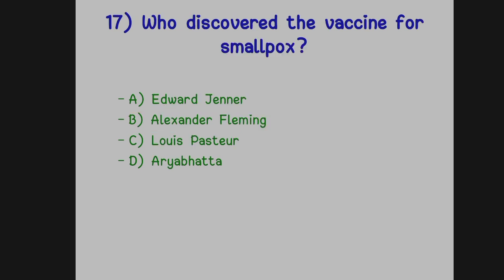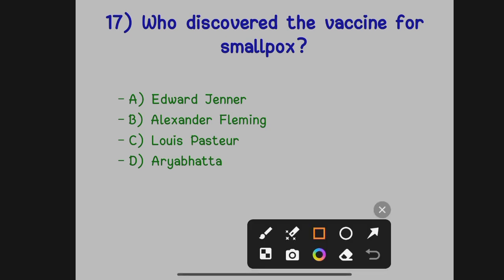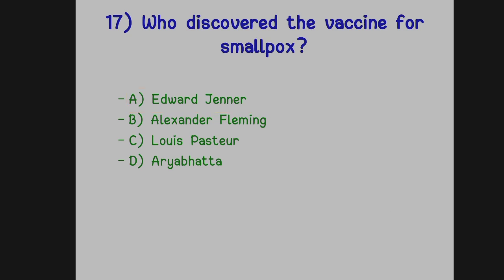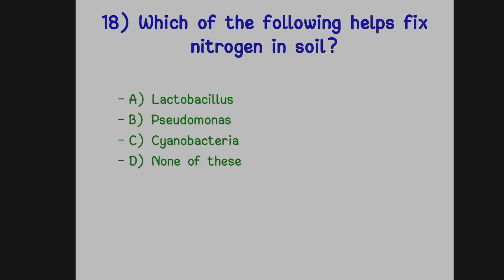Who discovered the vaccine for smallpox? Option A: Edward Jenner. Option B: Alexander Fleming. Option C: Louis Pasteur. Option D: Rebutta. The correct answer is Option A, Edward Jenner — he discovered the vaccine for smallpox.